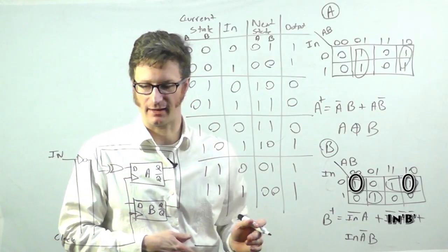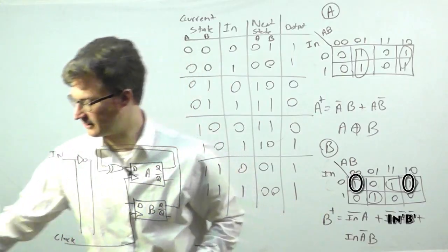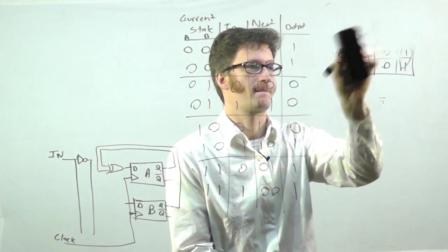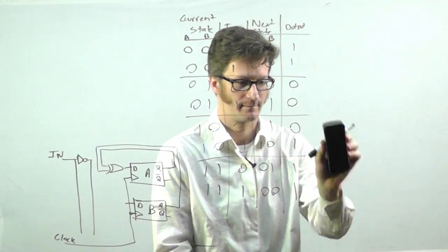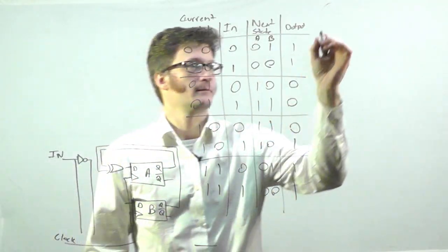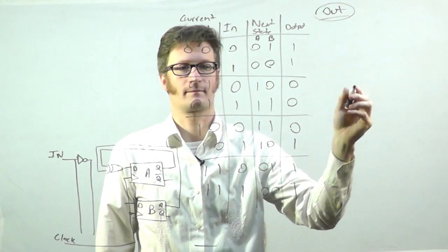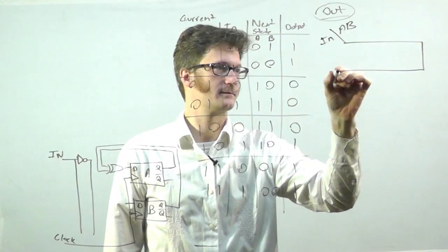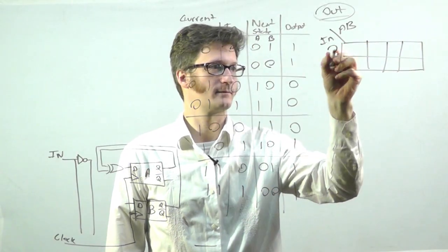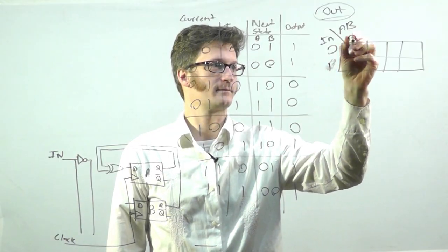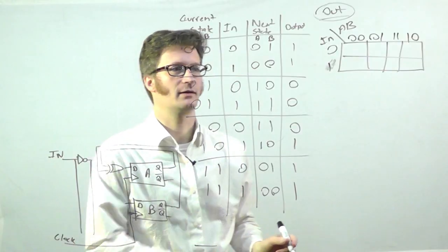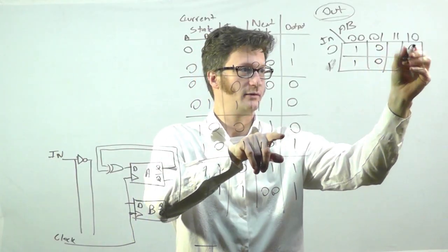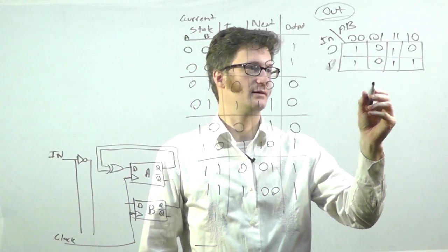And then, to get your output, it's the exact same thing. So, output, we're going to just create another Karnaugh map. Alright. So, IN current state A and B. Okay. And so, now, here we have 1, 1, 0, 0, 0, 1, and 1, 1.